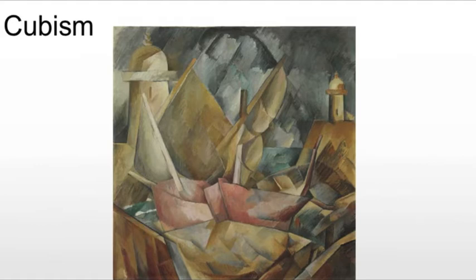The Cubist style emphasizes the flat two-dimensional surface of the picture plane. They are not trying to create three-dimensional space, so they are rejecting the traditional techniques of perspective, foreshortening, and modeling — chiaroscuro, the use of light and dark to create volume. They're refuting time-honored theories of art as the imitation of nature, finally moving beyond even making an attempt to imitate nature, really moving beyond nature as a source.